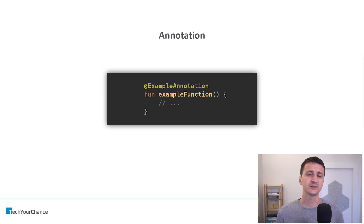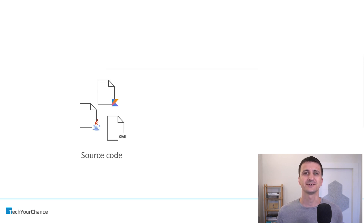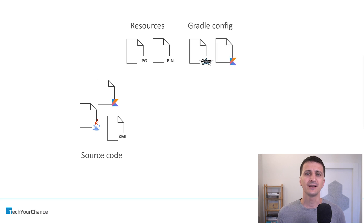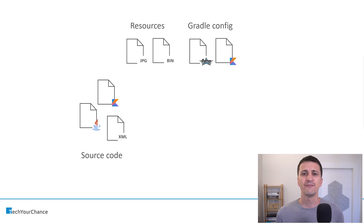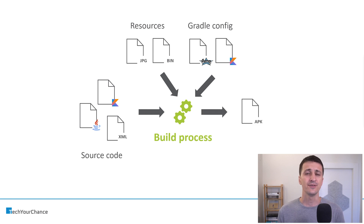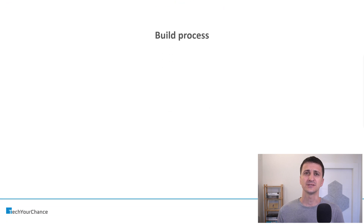To understand where annotation processing fits into the overall build flow, let's remind ourselves how this build flow looks. We've got source code and then we have resources, for example images, and we add configuration files, Gradle configuration files on top of that, feed everything into the build process, and this build process yields APK files that we distribute to our users.